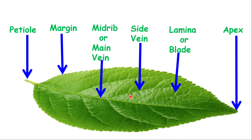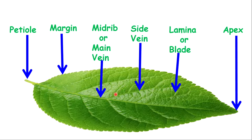The side veins can be different in monocot and dicot. In this leaf, which is a dicotyledon leaf, the side veins are branching. But in a monocotyledon, these veins will be parallel to the central vein.